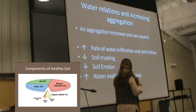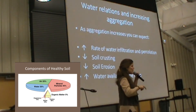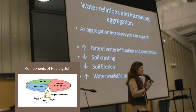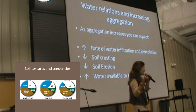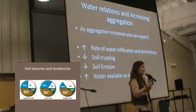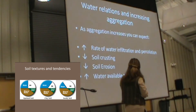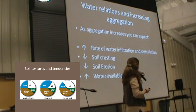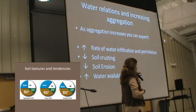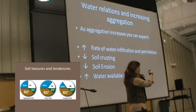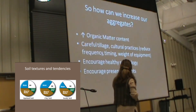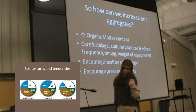With increased aggregation, you get more water infiltrating your soils. With really fine, non-aggregated soils, water can just sheet off and you can even get a salty crust where water doesn't penetrate well. But with loose, healthy, well-aggregated soils, water goes in rather than running off, so you have less soil erosion. And you're going to have more water available to your crops. We increase aggregation by increasing organic matter in our soils, tilling at the right time, and avoiding compaction.